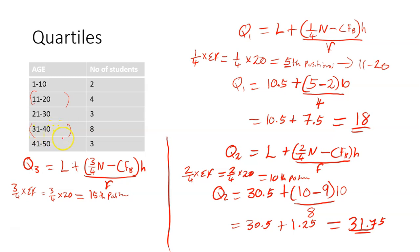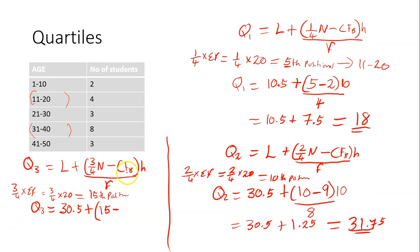It's also class 31 to 40. To get the third quartile, the lower class boundary of the third quartile class is 30.5. Plus, 3 over 4 N means 3 over 4 sigma F, which is 15. Minus CFB — the cumulative frequency of the class before that particular class — which is 2 plus 4 plus 3, giving 9.